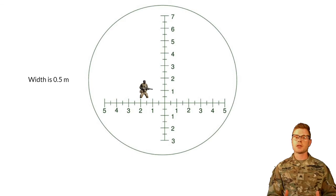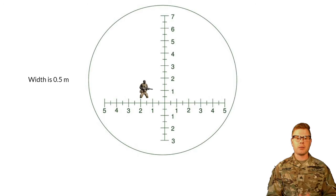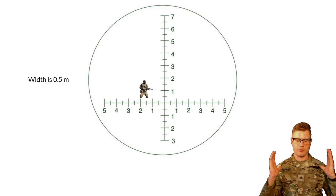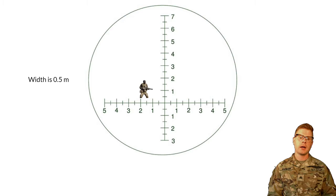Now we are coming to personnel. We're using the same measurements — still using width. We're going to go ahead and go with 5 mils for the measurement. I'm measuring from the shoulders, not the edge of the arms. Width is 0.5 meters.